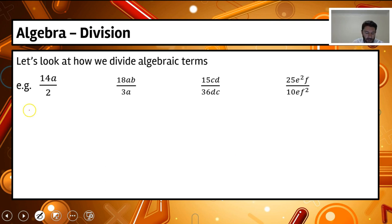If we have a look at our examples here, we can look at dividing the numbers to see if the numbers divide straight away. And then if there's any letters, they may actually cancel out across the numerator and denominator.